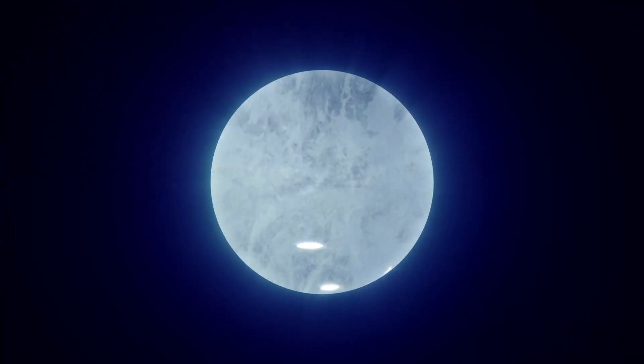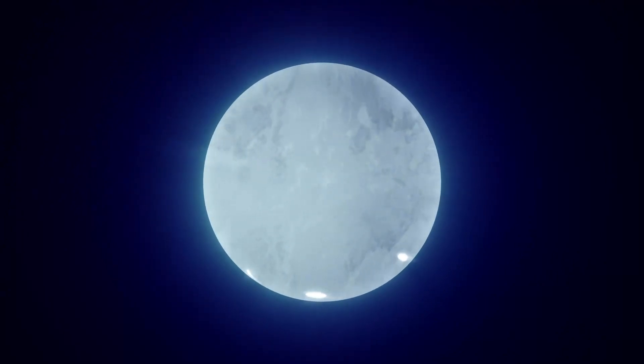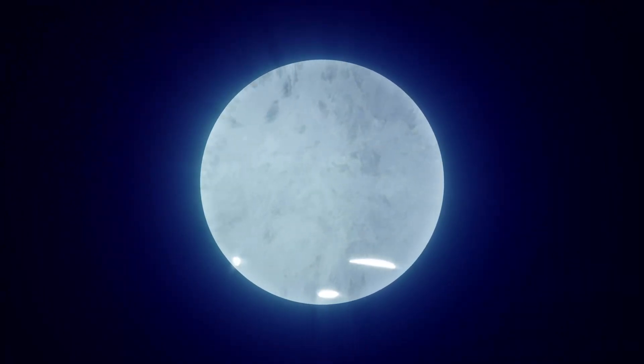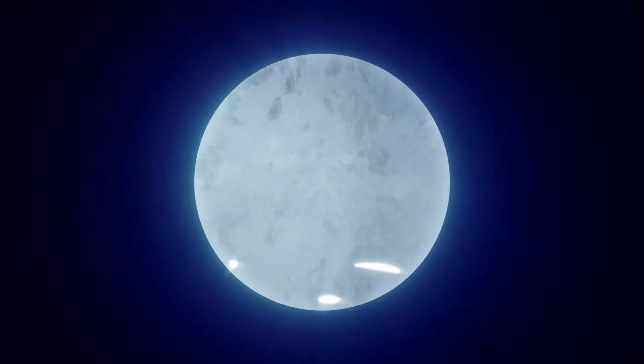Observing J0030 in X-rays, astronomers have now made the most precise and reliable measurements of any pulsar's size. And they've discovered that J0030's appearance differs dramatically from textbook depictions.